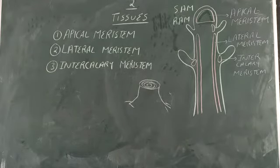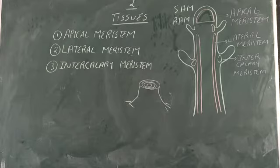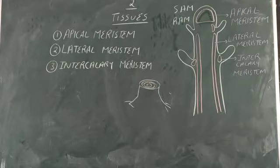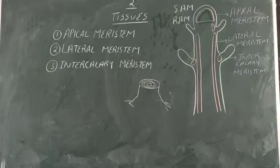On this basis, the lateral meristem is divided into two parts: the interfascicular cambium and the cork cambium. Interfascicular cambium is present in the vascular bundle, and cork cambium is found underneath the bark of the tree — both are examples of the lateral meristem.